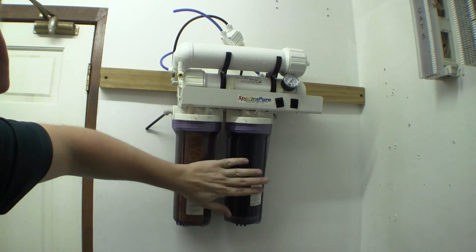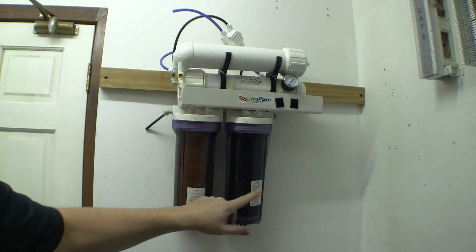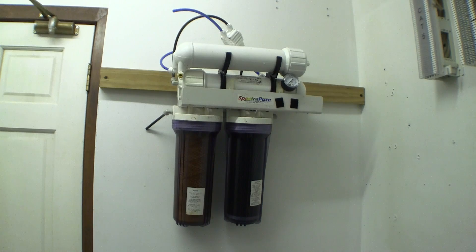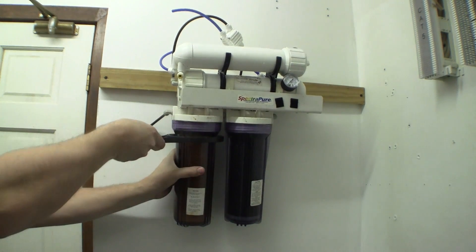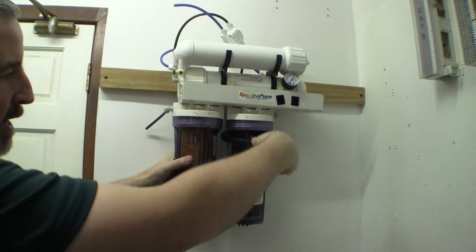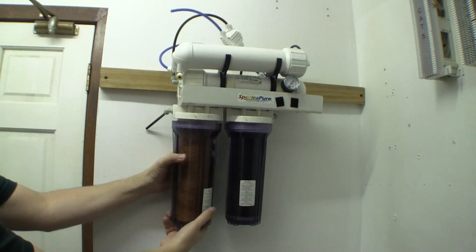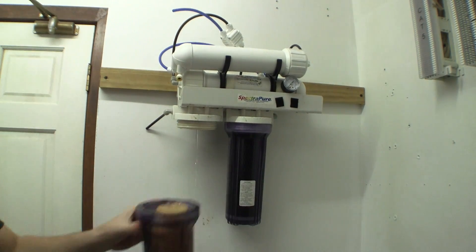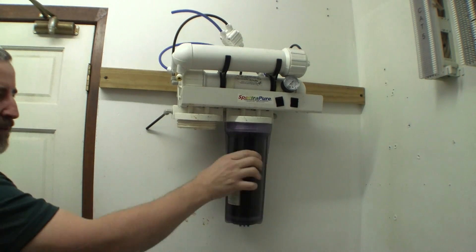Now we need to remove these pre-filters. They're full of water. We don't want to have that weight. It's kind of a mess. So I'm just going to use this wrench and loosen them up. Set these aside. I'll change those pre-filters too.